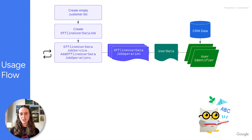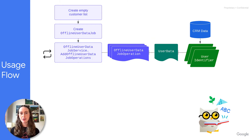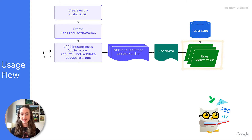Next, add operations to your offline user data job. Each operation contains a user data object, which represents a member of the user list and contains one or more user identifiers pulled from your first-party data. For customer lists that contain contact information, these user identifiers can include email addresses, phone numbers, or mailing address info — all of which must be hashed according to the requirements.